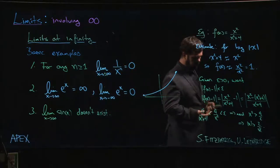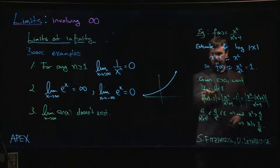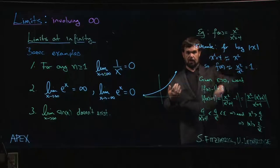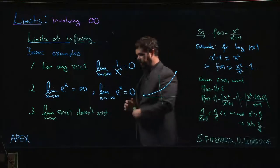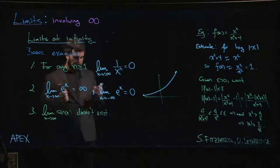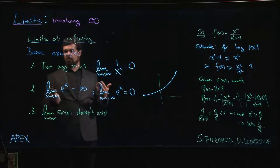There you can never find this M so that you can get within epsilon of some value, because the function is going to keep going up and down. It doesn't matter how far you go, it's always going to keep oscillating back and forth. It's never going to settle down to a particular value.